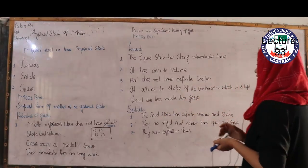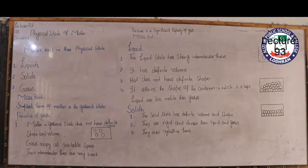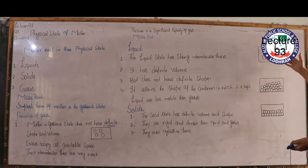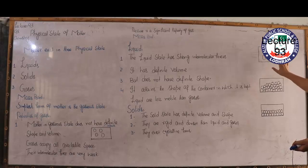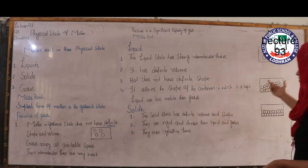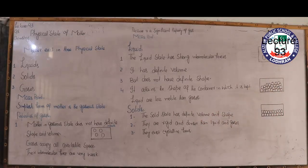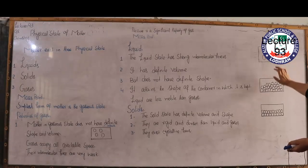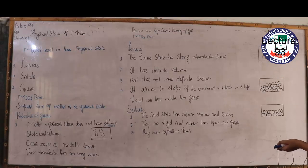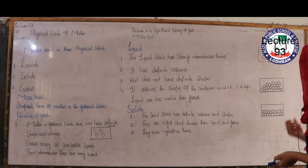Liquids are less mobile than gases. Here mobile refers to movement, not a cell phone. Gas molecules move more freely than liquid molecules. Although liquid molecules are in a continuous state of motion, they are less mobile than gases because liquid molecules have stronger intermolecular forces as compared to gas molecules.